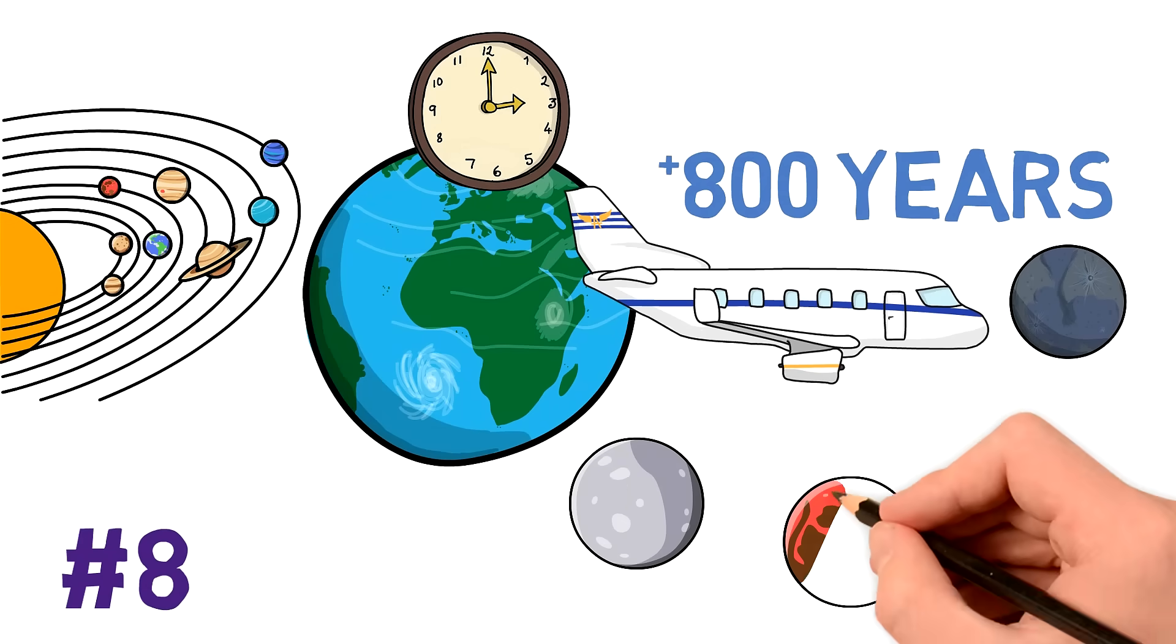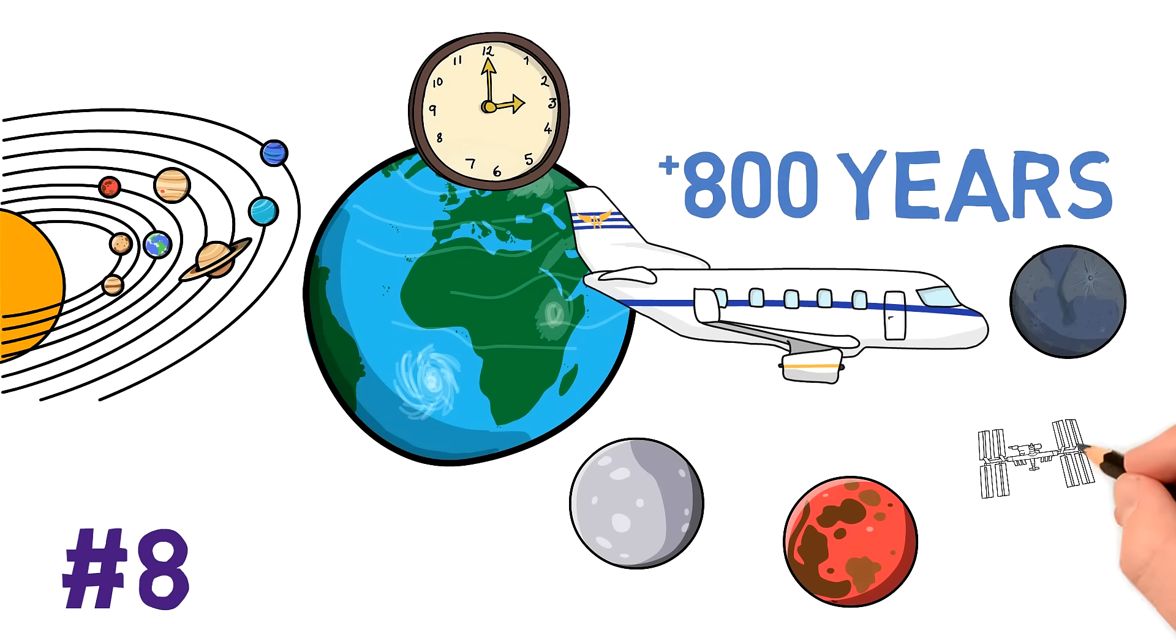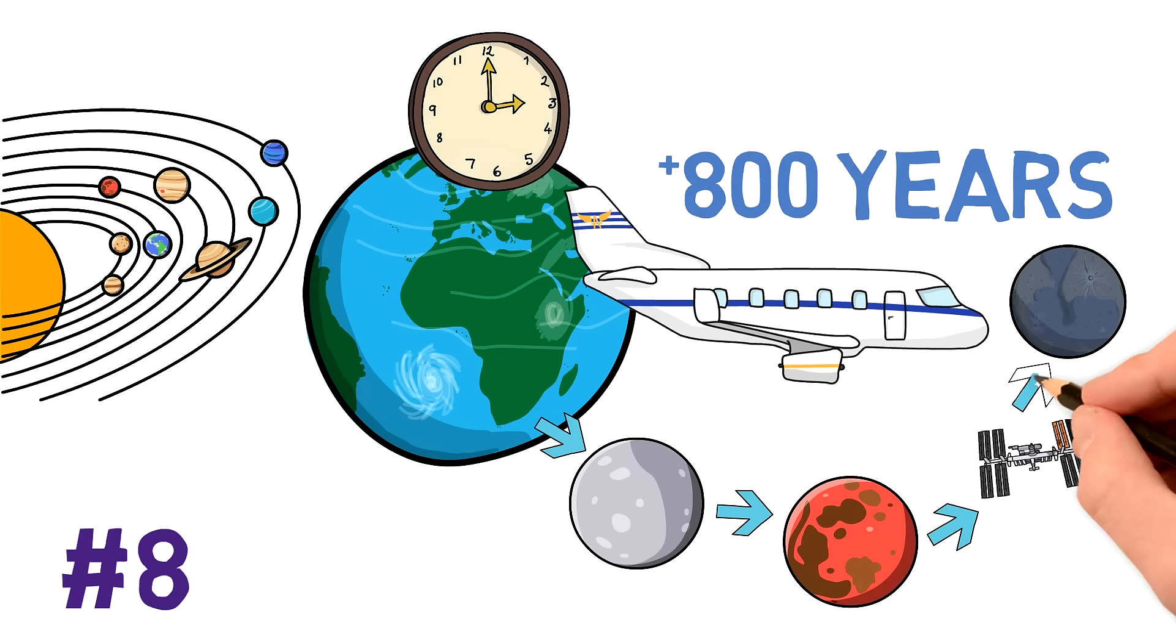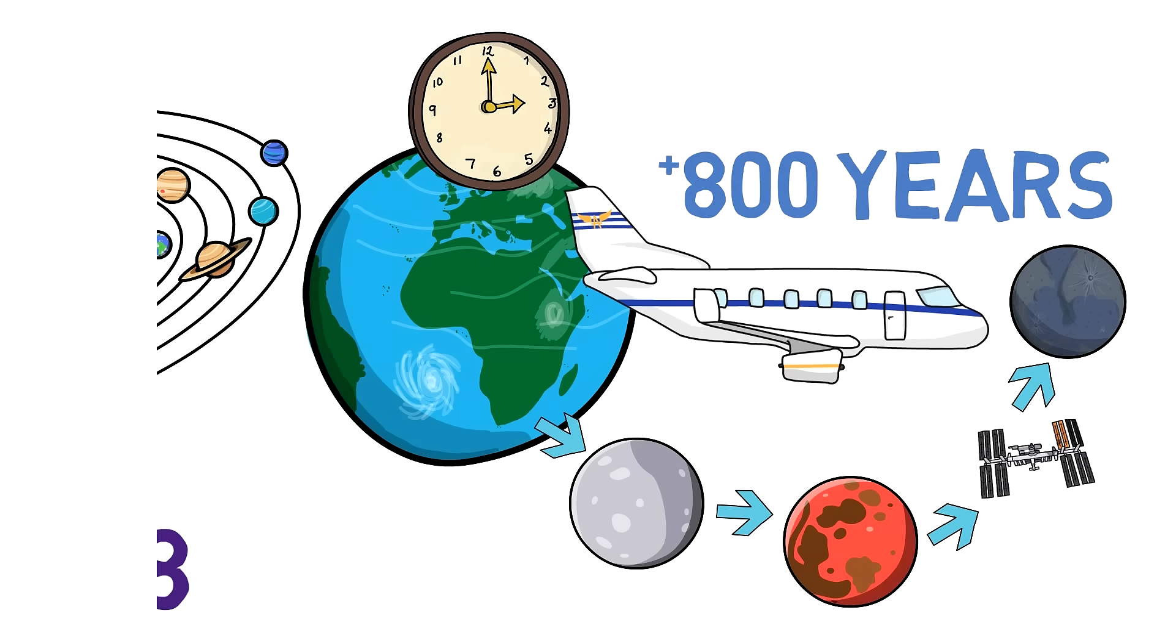One solution, at least inside the solar system, could be to build stopping points where we could refuel and just relax for a little bit, like a moon base, a mars base, several space stations, and so on.